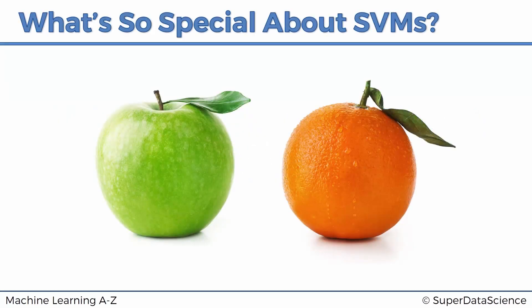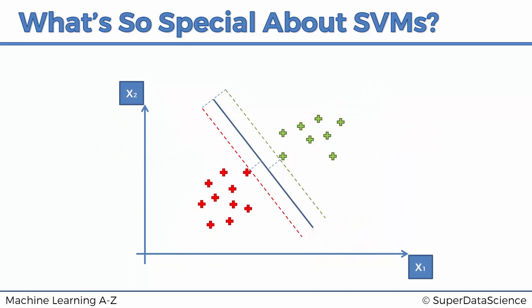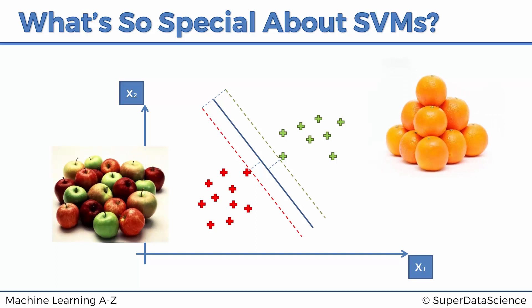Imagine you're trying to teach a machine how to distinguish between apples and oranges. You're telling the machine, I'm going to give you some test data. Have a look at all these apples and oranges. Analyze them, see what parameters they have, and then I'm going to give you a fruit which will be either an apple or an orange, and you're going to need to classify it.